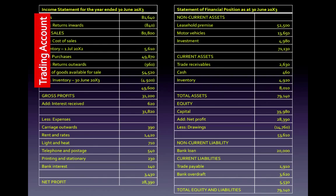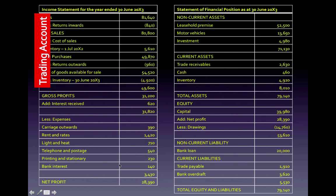Following the trading account, you will then add any other income that you may have other than your normal sales, such as interest received in this case. And then you less out all other expenses incurred to carry out your trading activity — things like carriage outwards, rent and rates, light and heat, and bank interest. The total expenses are 3,430. So if you take your gross profit plus interest received, 31,820, minus your expenses, you will get your net profit for that period. That part of the income statement is what we call the profit and loss account.